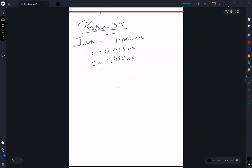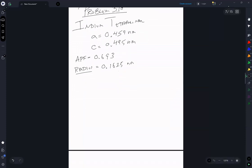You have an atomic packing factor of 0.693 and a radius of 0.1625 nanometer. The problem is to, part A, determine the number of atoms per unit cell.